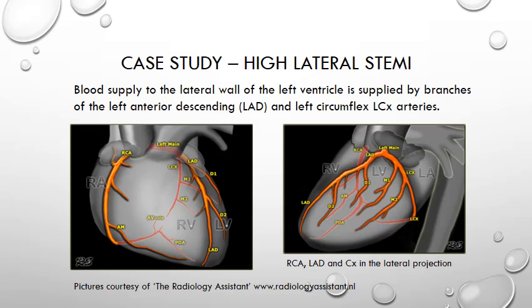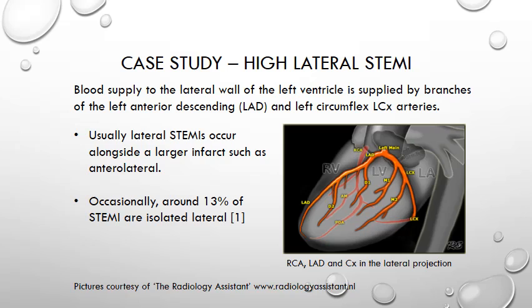First let's remind ourselves of the heart circulation with the focus on the blood supply to the left ventricle. The picture on the left shows the right coronary artery and the left main, left anterior descending, and left circumflex, and on the right we see a lateral projection of the heart with the focus on the left main, LAD, and circumflex arteries. Blood supply to the lateral wall of the left ventricle is supplied by branches of the left anterior descending and the left circumflex arteries, which we can see here.